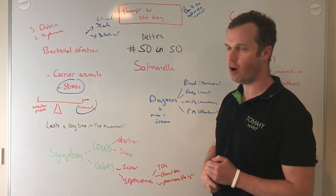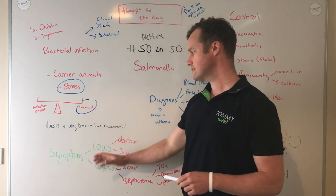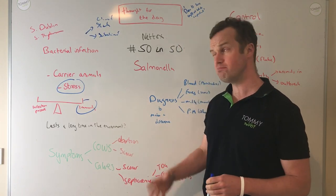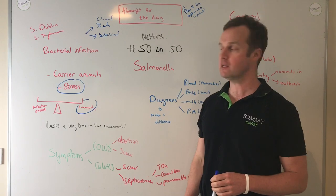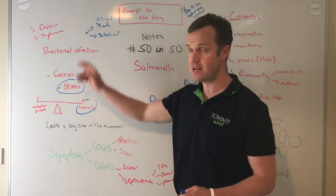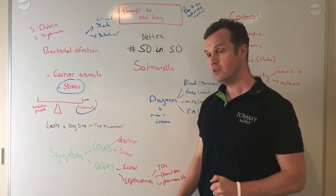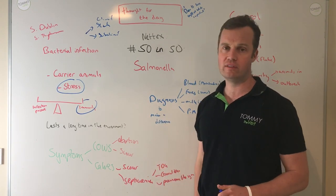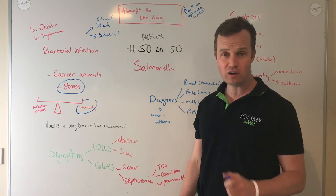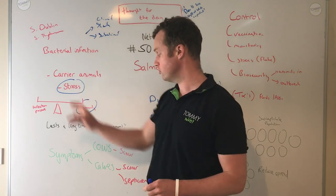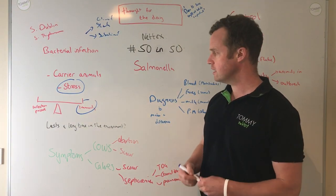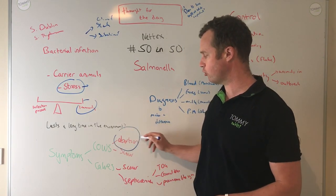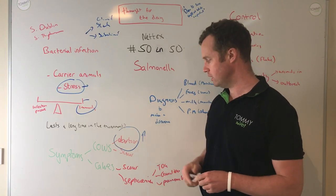Salmonella symptoms can be slightly different between cows and calves. In cows we typically see abortion, possibly in the later stages of pregnancy. Sometimes there are abortion storms — Salmonella Dublin is often the cause. Sometimes these cows abort with no symptoms; sometimes retained cleanings occur and the cow can get quite sick. Salmonella can also cause scouring cows. We see an increased amount of abortion in autumn time in our seasonal system.